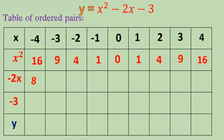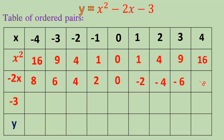For the next row, minus 2 times minus 4 equals 8, minus 2 times minus 3 equals 6, minus 2 times minus 2 equals 4. We have to complete the row.